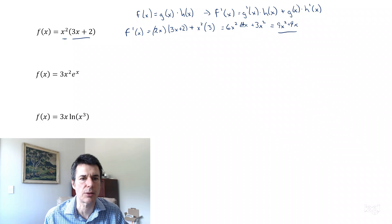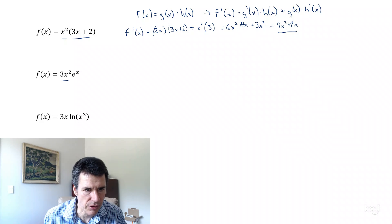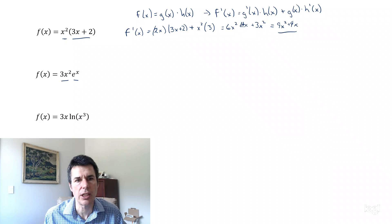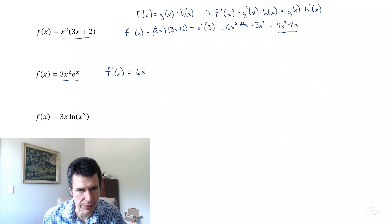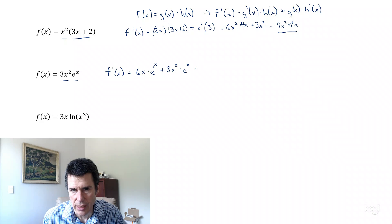Second derivative. The first function is 3x squared, second function is e to the x. So f'(x) is 6x times e to the x plus 3x squared times the derivative of the second function, which is just e to the x. We could write that as (6x + 3x squared) times e to the x.